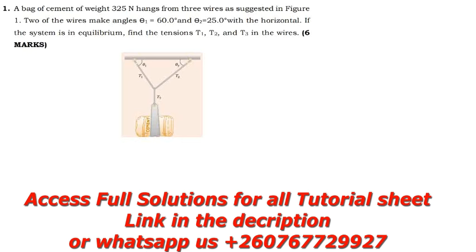In this tutorial we are going to solve some questions under Newton's laws of motion. The first question says: a bag of cement of weight 325 Newtons hangs from three wires as suggested in the figure. Two of the wires make angles of 60 degrees and 25 degrees with the horizontal. If the system is in equilibrium, find the tensions T1, T2, and T3 in the wires.